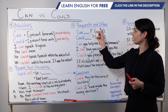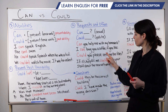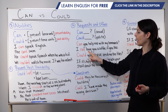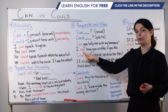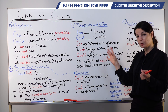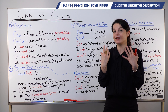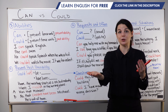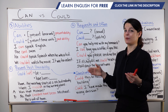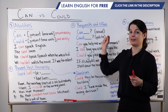Now let's look at using can to make an offer: I can buy you a coffee, if you like. If you like means if you want one, do you want one? In the offer pattern, can comes before the verb. The speaker is saying, right now I have the ability to buy you a coffee — it's possible, I can buy you one. I can buy you a coffee, if you like — a nice, friendly way to make an offer.